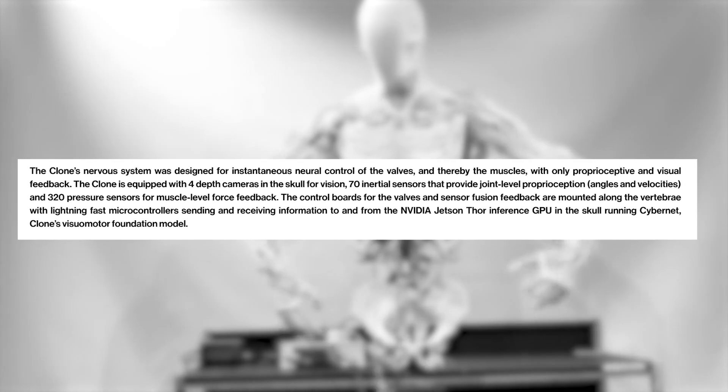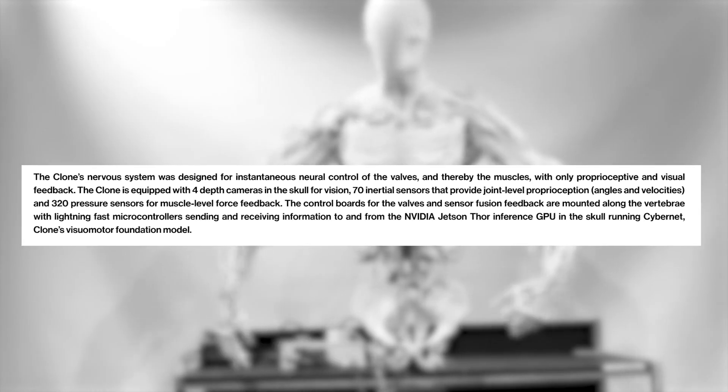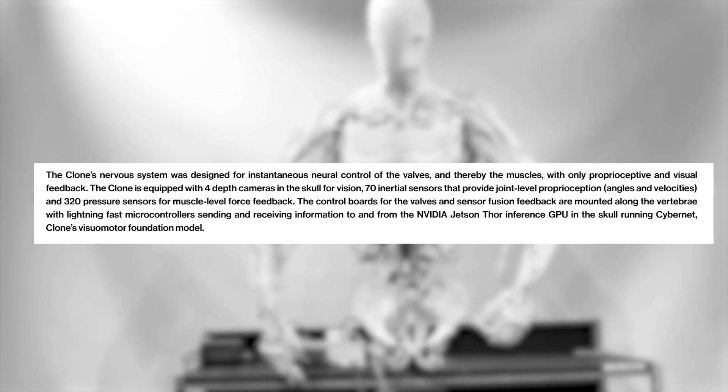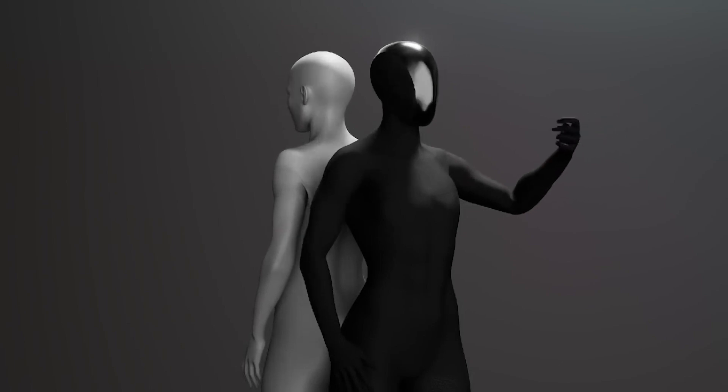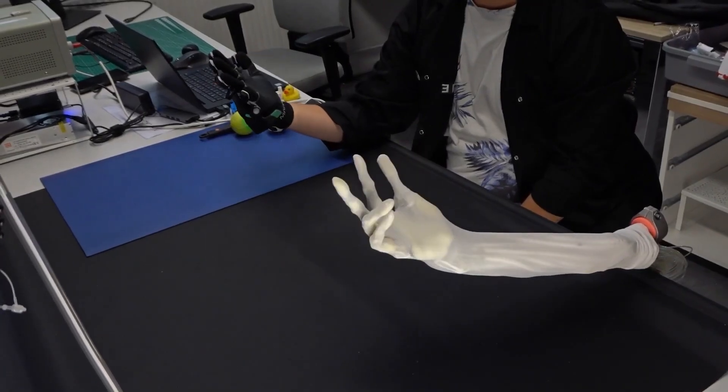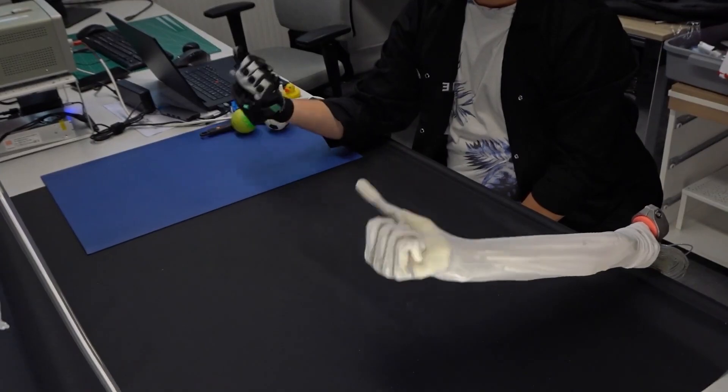The microcontrollers relay the data to a powerful NVIDIA Jetson Thor GPU running Clone's Cybernet model. This setup allows the robot to have proprioceptive awareness, meaning it knows where its limbs are in space and can adjust its movements accordingly.